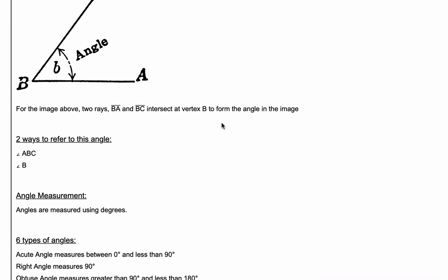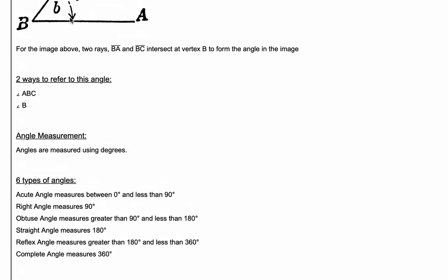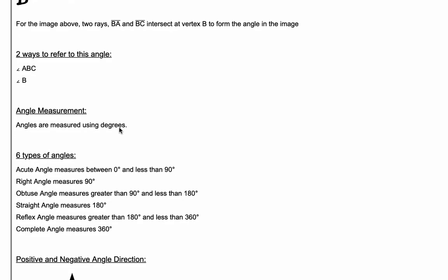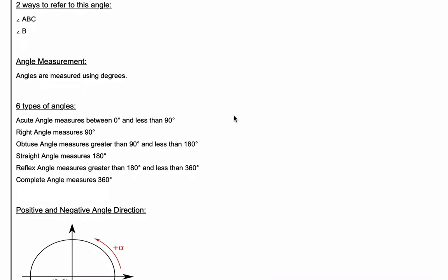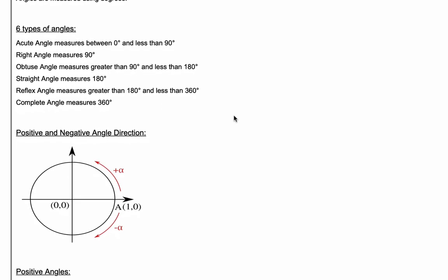Now angles are measured, the space between the two rays is measured using a measurement called degrees, and there's six types of angles you need to be concerned with.